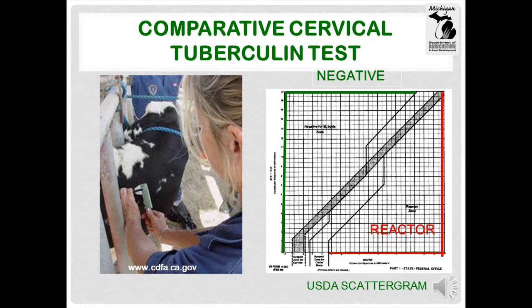Based on where the response is plotted, the animal is either classified as negative, suspect, or reactor. Negative cattle require no further testing at that time. Cattle that respond to the CCT test require additional investigation depending on many things, including herd status, area of the state, and possibly other factors.